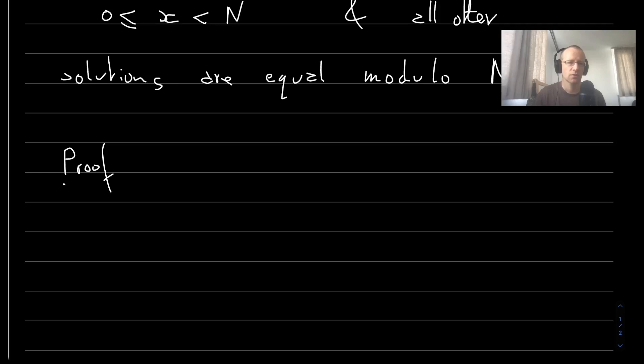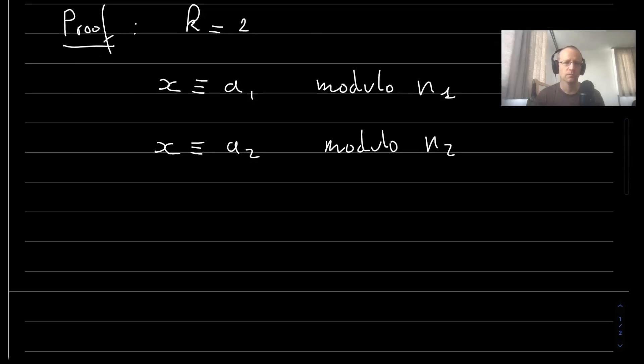So the proof basically goes as follows. Let's suppose that we are in the case k equal to 2, and that x is equal to a_1 modulo n_1, as well as equal to a_2 modulo n_2, then by Bézout.